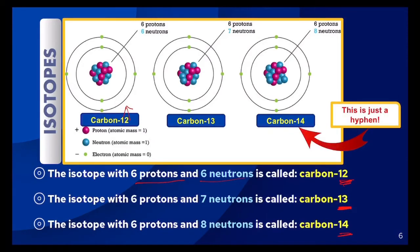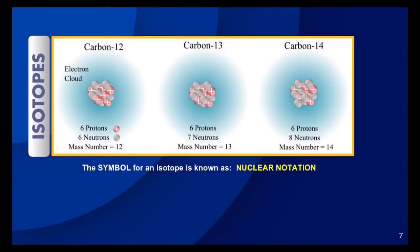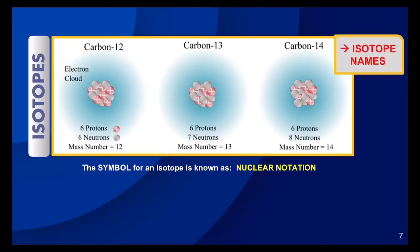Remember, the dash in the middle of carbon-14 is just a hyphen — it is not a negative symbol. Here's another representation of those same isotopes. What's different about this picture is that you can't see the electrons; the electrons are just in the electron cloud. So I just want to show you different representations of how you may see atoms pictured. Now we're going to take a look at how to write the symbol for an isotope, which we also call nuclear notation, because we're taking into account anything present in the nucleus in terms of protons and neutrons.